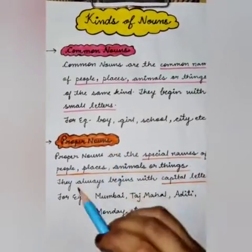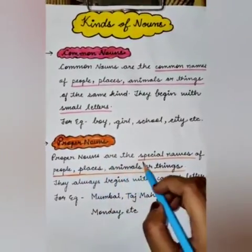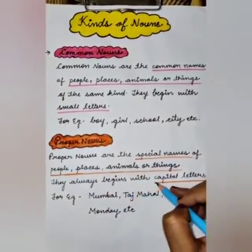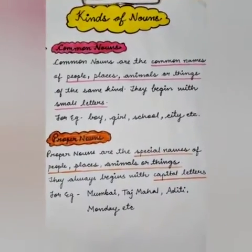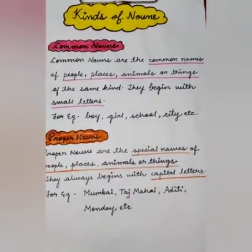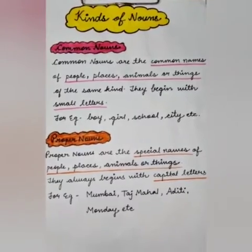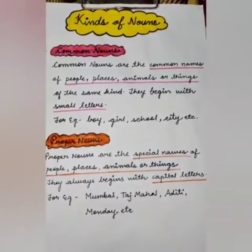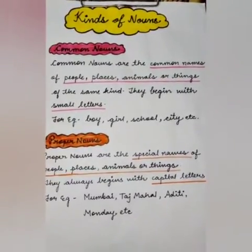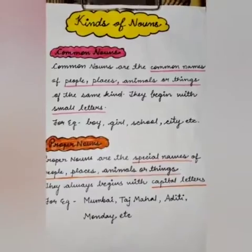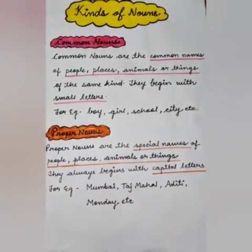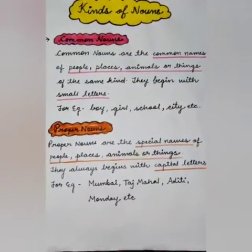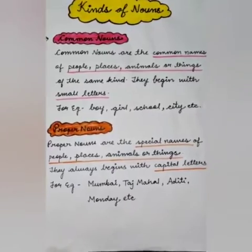Now comes the proper nouns. Proper nouns are the special names of persons, places, animals or things. They always begin with capital letters. Proper nouns are the specific names that we use for a particular person, place, animal or thing.